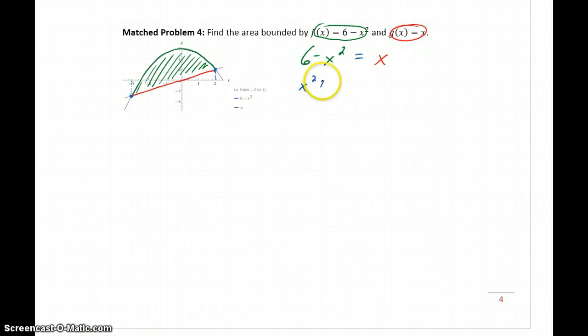Collecting all those terms on one side gives us x² + x - 6 = 0, which we could factor as (x + 3)(x - 2) = 0, which means our two points of intersection would be at x = -3 and x = 2.